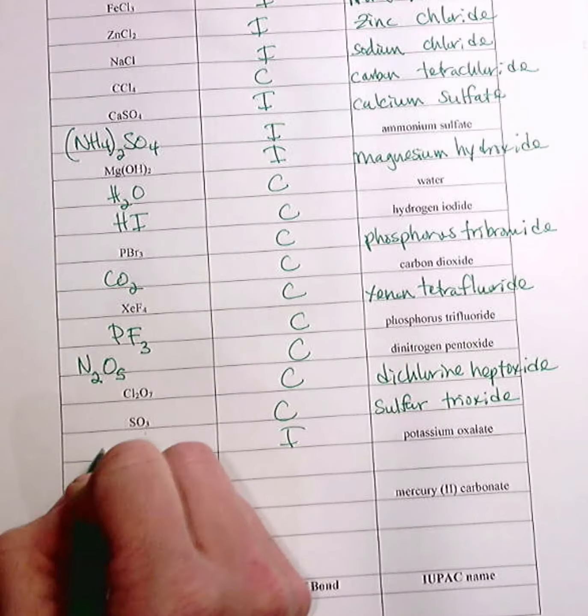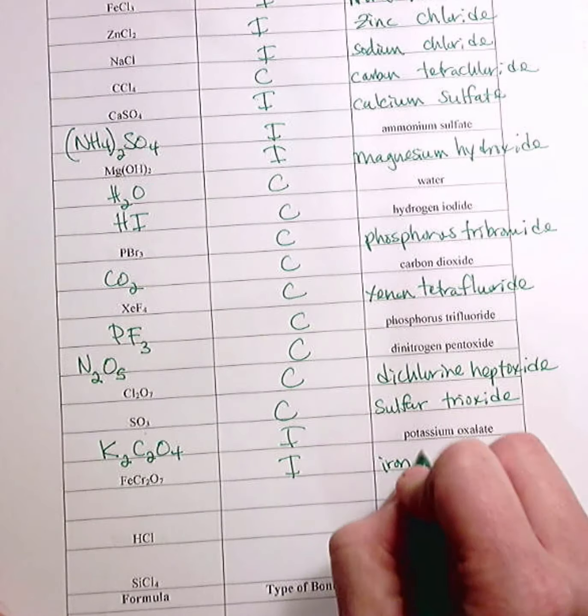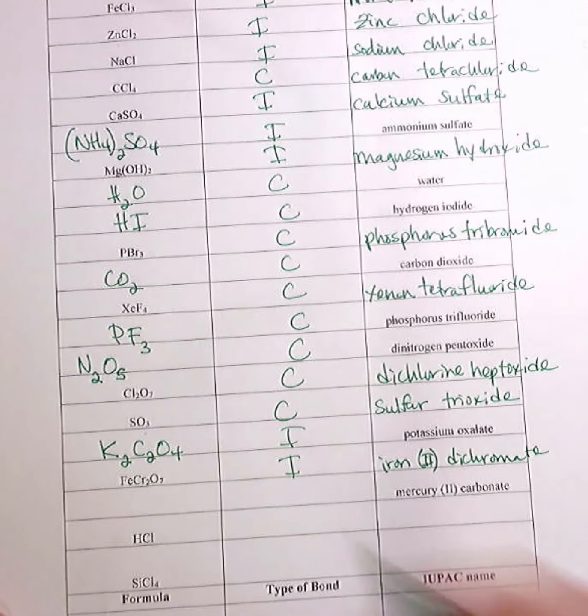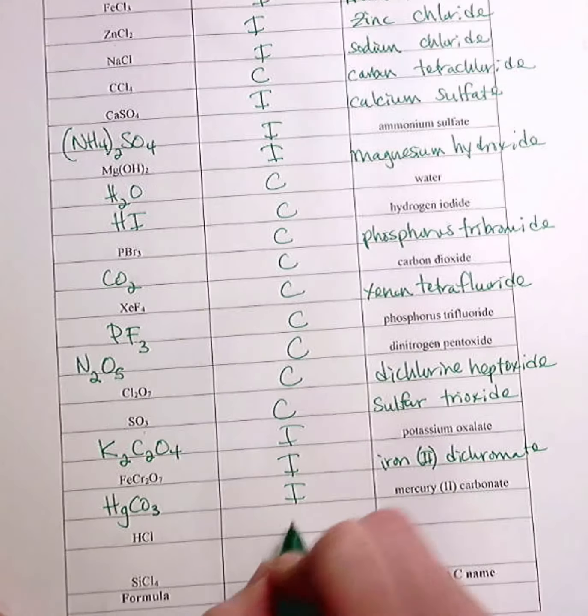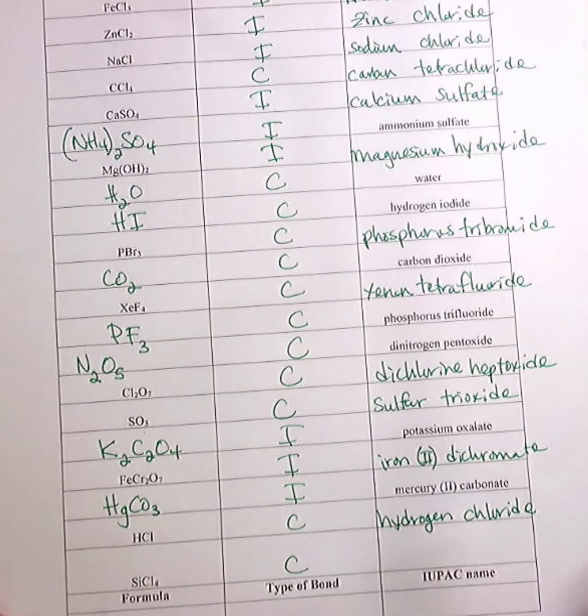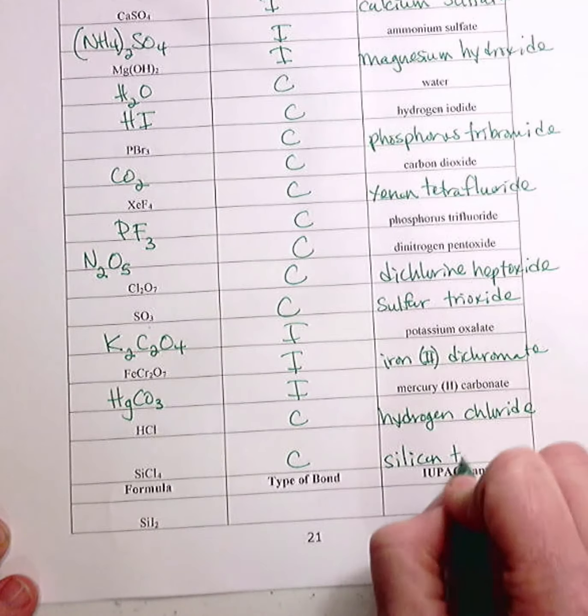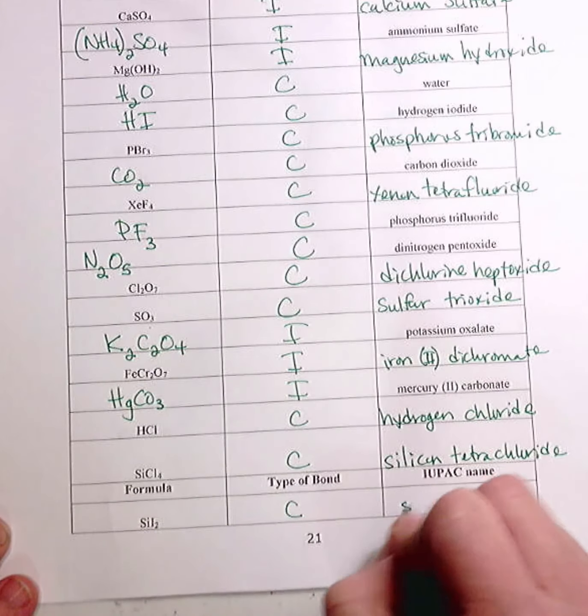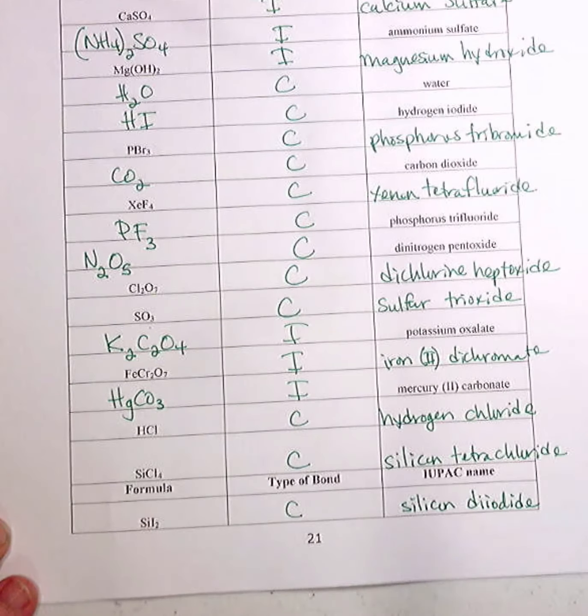Okay. The next one is ionic. Potassium oxalate. So that's K2C2O4. Ionic. Iron 2 dichromate. All right. Mercury 2 carbonate. That would be ionic. So HgCO3. Covalent. Hydrogen chloride. Next one. Covalent. Silicon tetrachloride. Okay. Covalent. Diiodine. Kind of a weird spelling. Okay. All right. And next page.